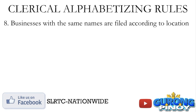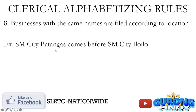Rule number eight: businesses with the same names are filed according to their location. Pagpareho po yung pangalan ng maraming businesses, then i-file po sila according sa kanilang location. For example, SM City Batangas and SM City Iloilo — since pareho po ang kanilang pangalan, SM City Batangas comes before SM City Iloilo.